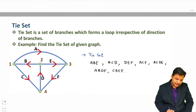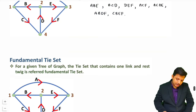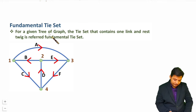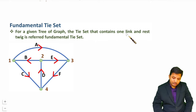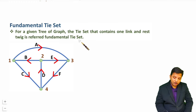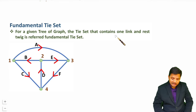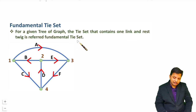Now I will explain what is fundamental tie set. When you want to understand fundamental tie set, you will be given a tree. For a given tree of a graph, a tie set contains one link and the rest twigs — and those will be fundamental tie sets. The closed loop should contain only one link and rest twigs.